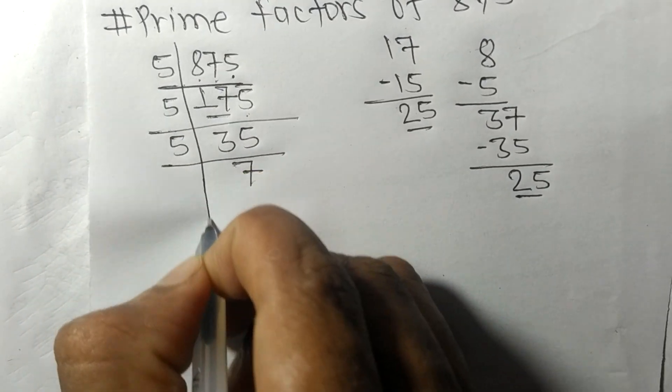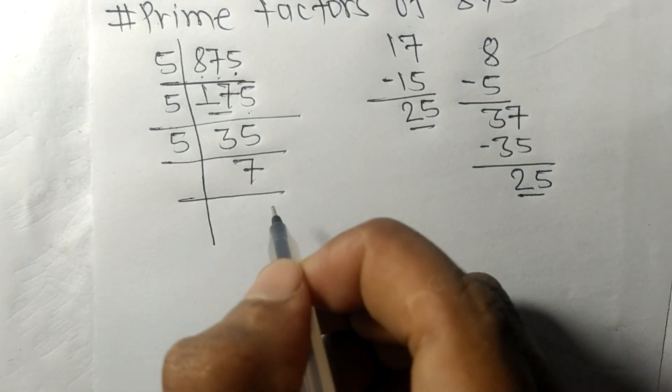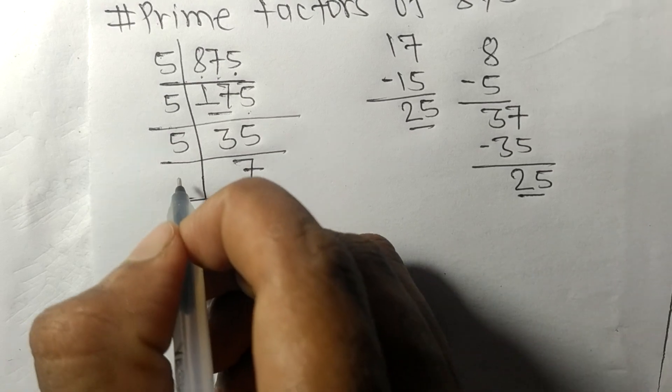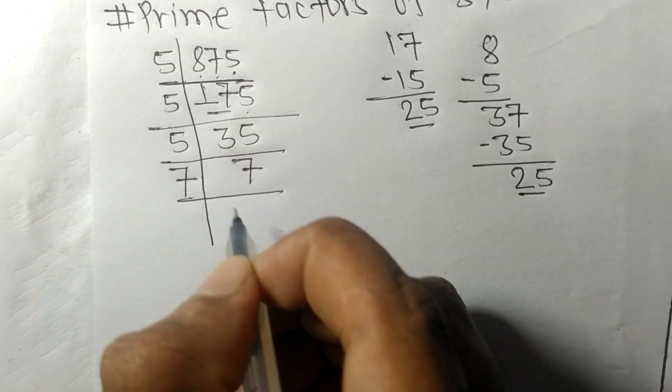Now we got 7 which is a prime number, so it is exactly divisible by 7 and we get 1.